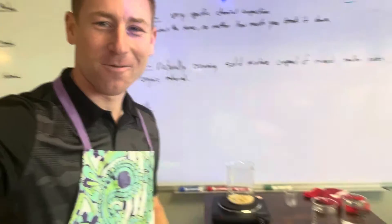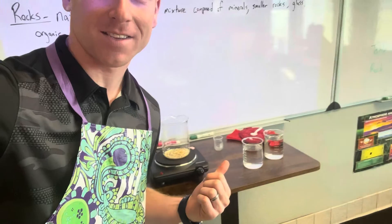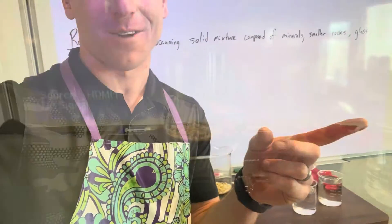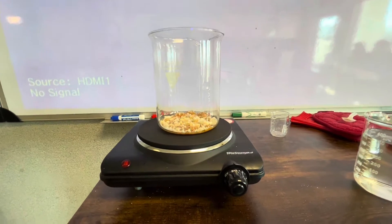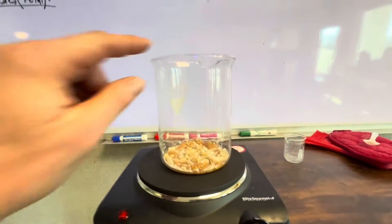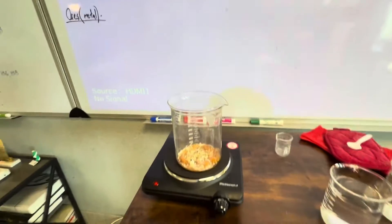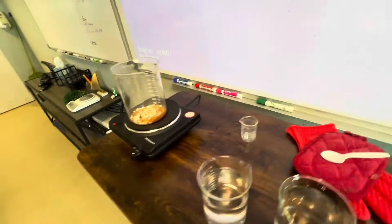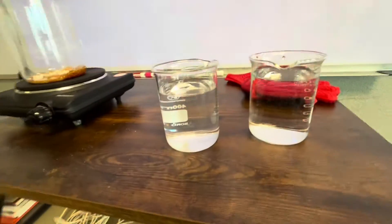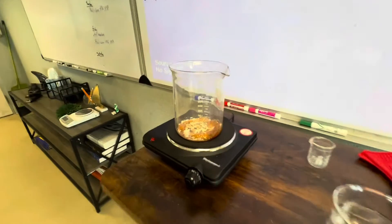All right guys, science class today — we're going to be melting some sugar and making a surprise, I'll show you in a minute. For this experiment we are melting 50 milliliters of sugar. I've got a thousand milliliter beaker here to spread out and get more surface area to make that go quicker, and then of course we've got a spoon, a couple of hot hands, and two beakers of cool water.